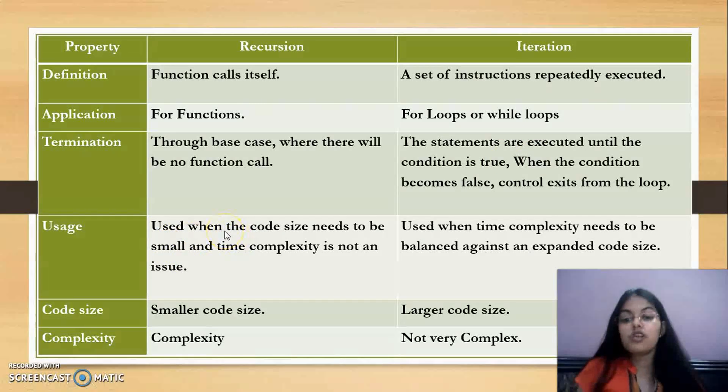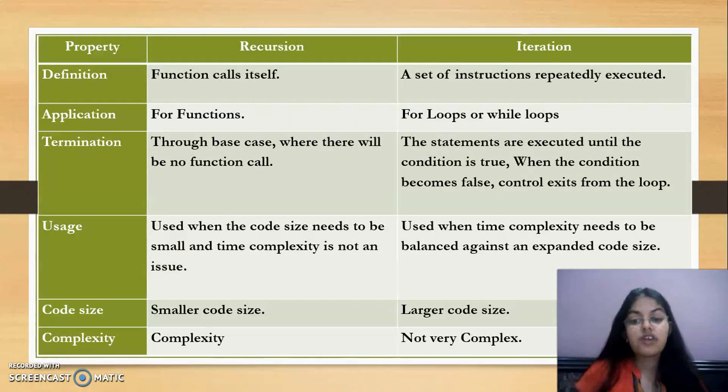Recursion is used when the code size needs to be small and time complexity is not an issue. Recursion takes more time in execution. I will cover in the next video how it executes and stores values using stack. So recursion is used when your code size should be small and time complexity doesn't matter in your program. But iteration is used when time complexity needs to be balanced against an expanded code size. If you need to balance time complexity even if code size increases, then we will go with iteration. Code size in recursion will be small, and in iteration it will be large. The complexity in recursion is more, iteration is not that complex.